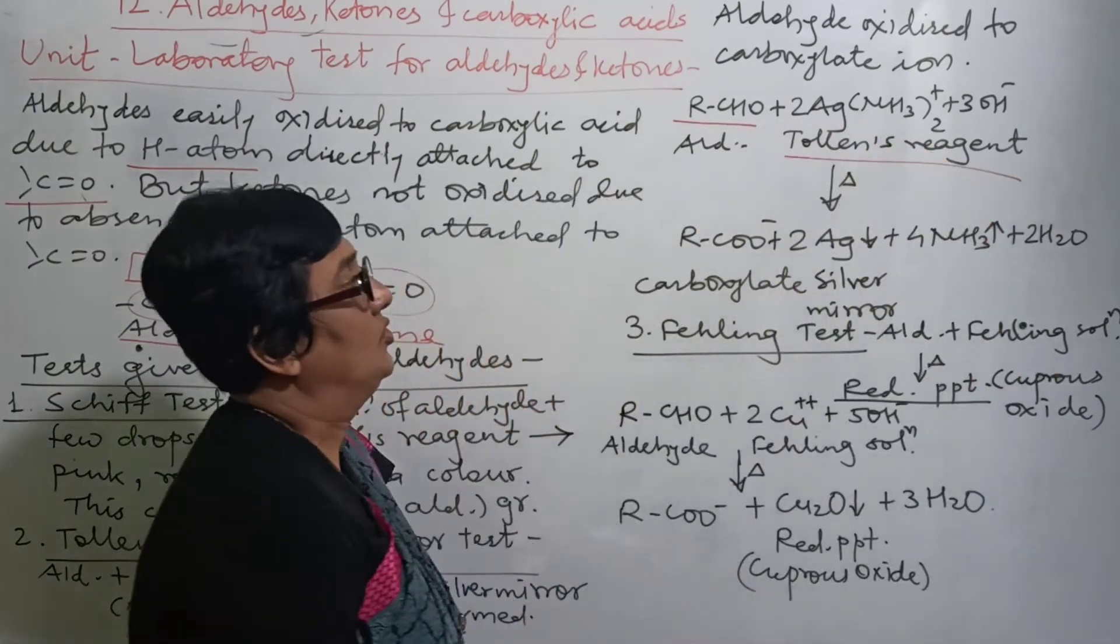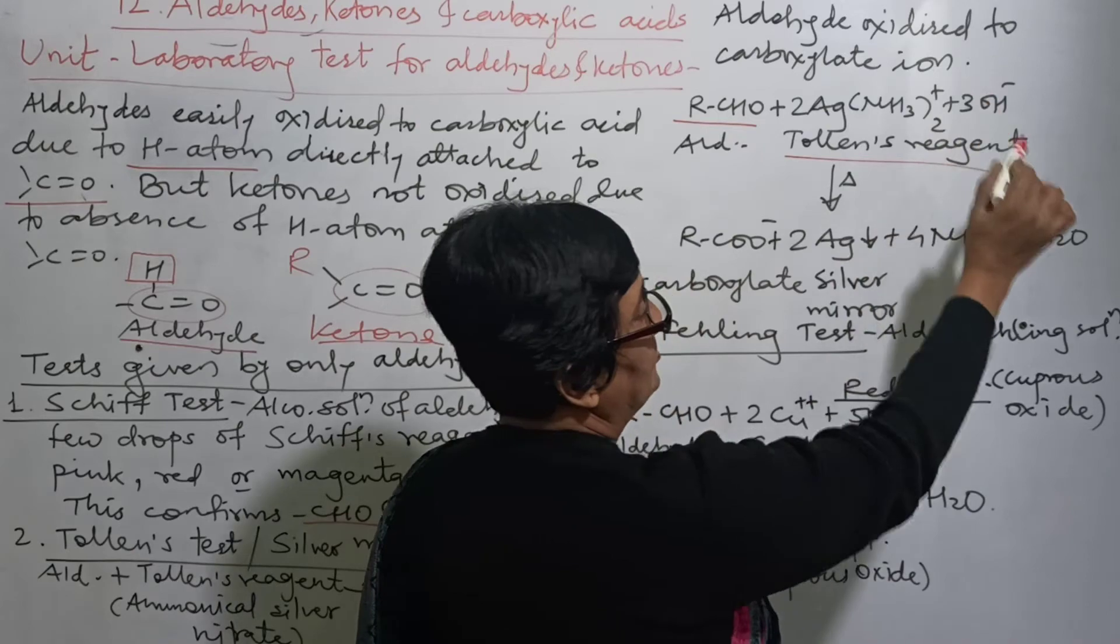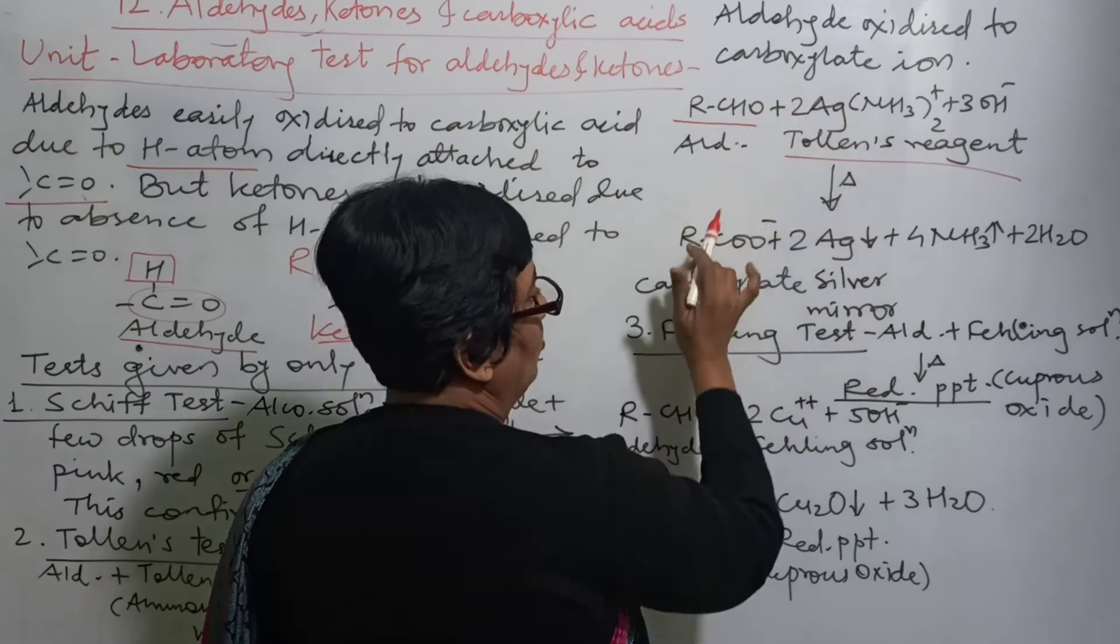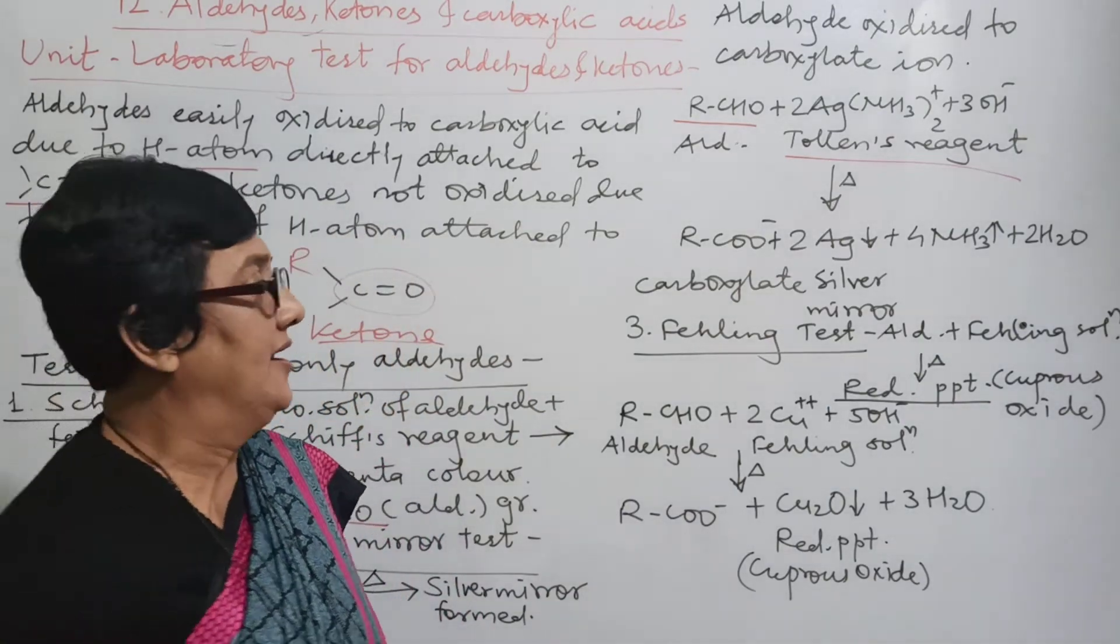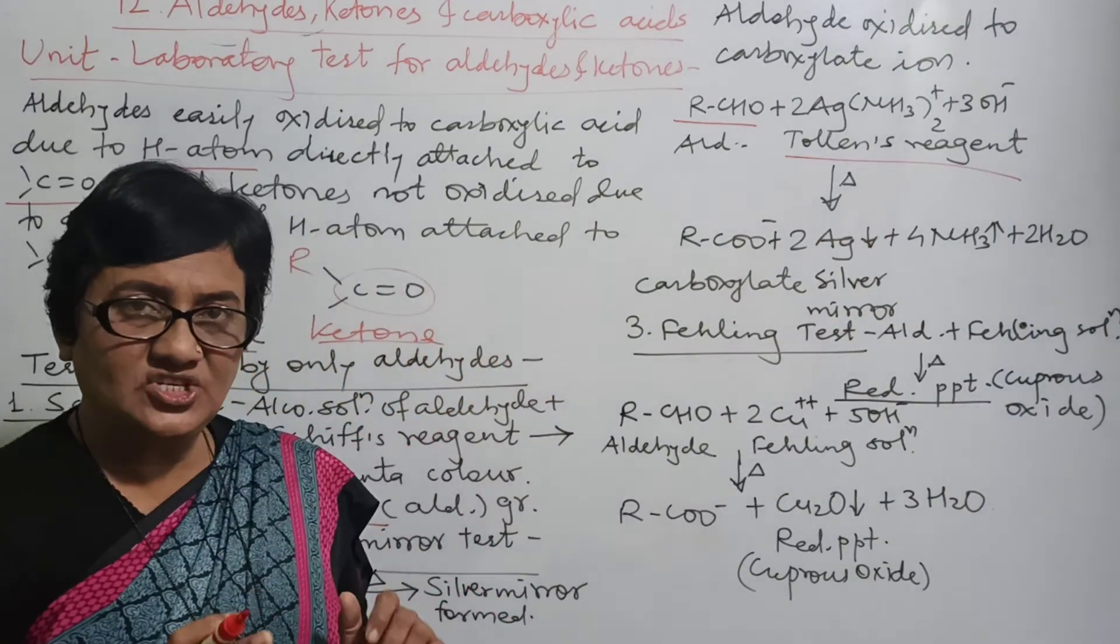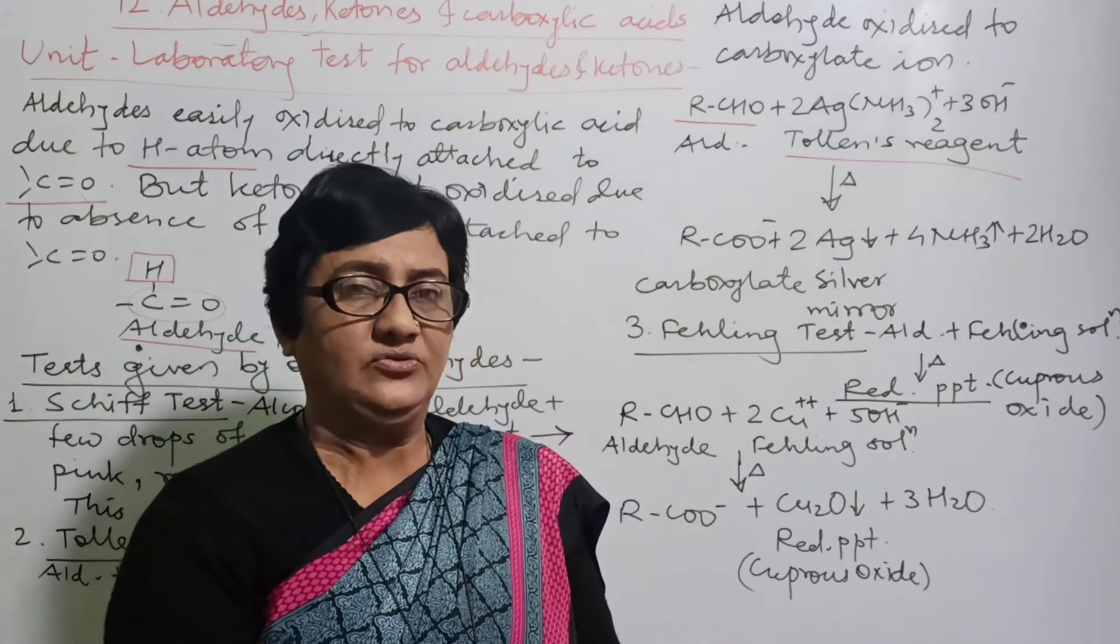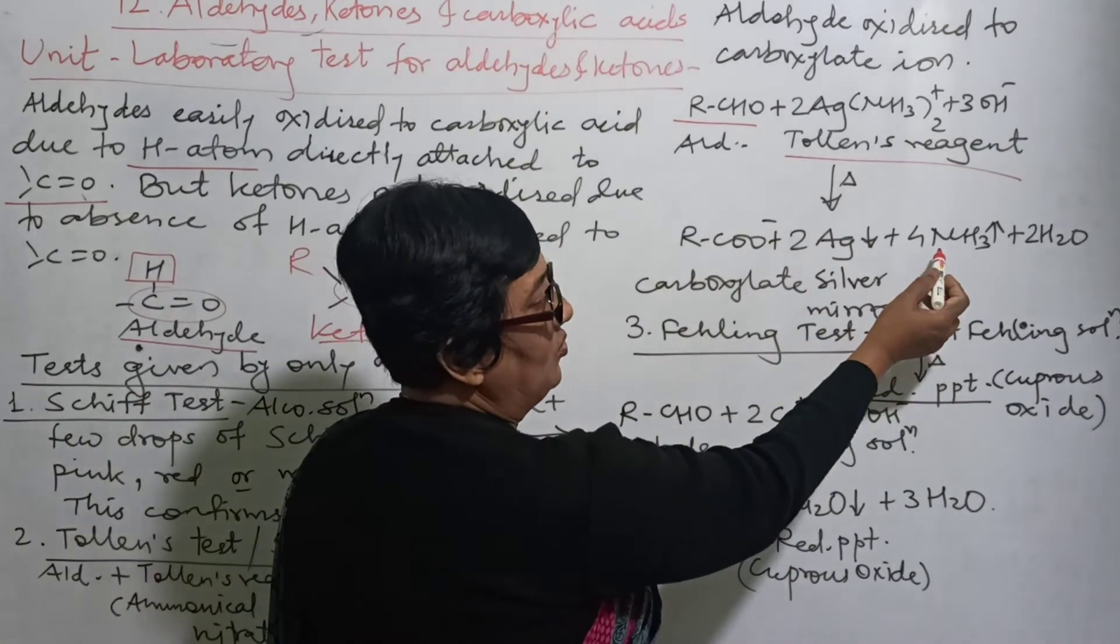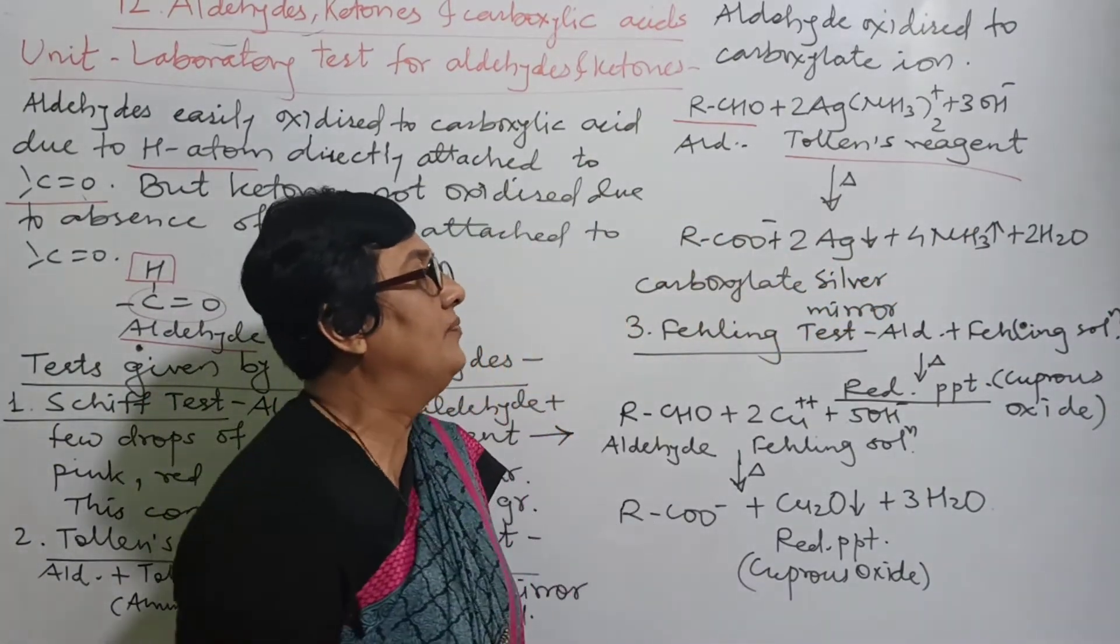And this Tollen's reagent reacts and what happens here? RCOO- means the RCOOH part, so carboxylate ion. Ag is shown by this arrow, means deposition of silver. Solid silver in the container where we heat, whether it's a test tube or another vessel, on its side a very beautiful deposition of silver occurs. And ammonia gas is evolved here, arrow shown like this means gas form ammonia.